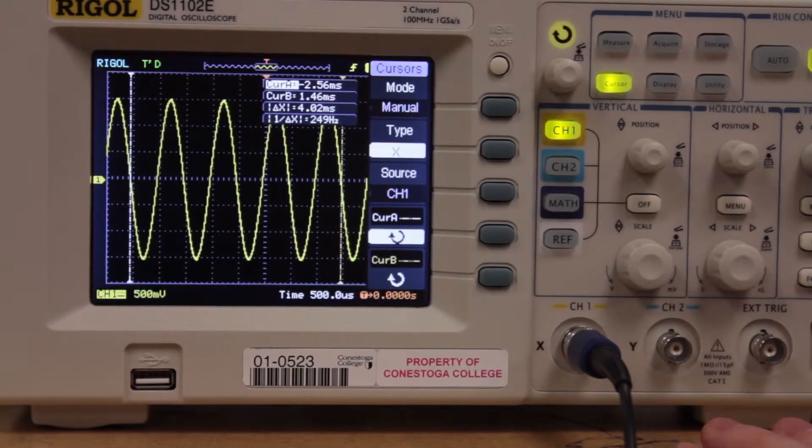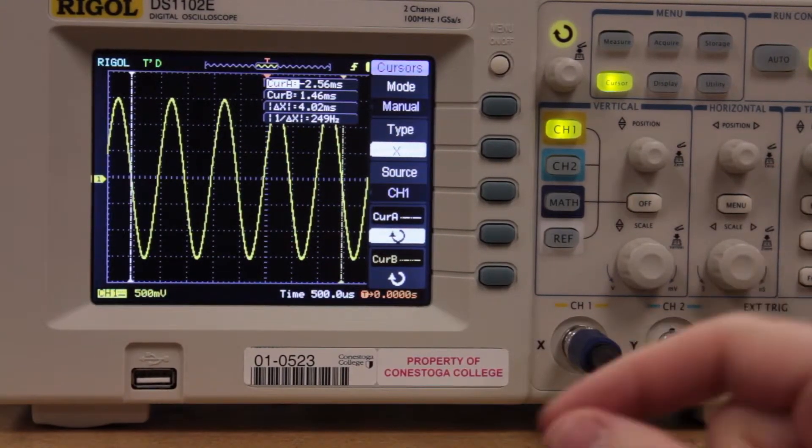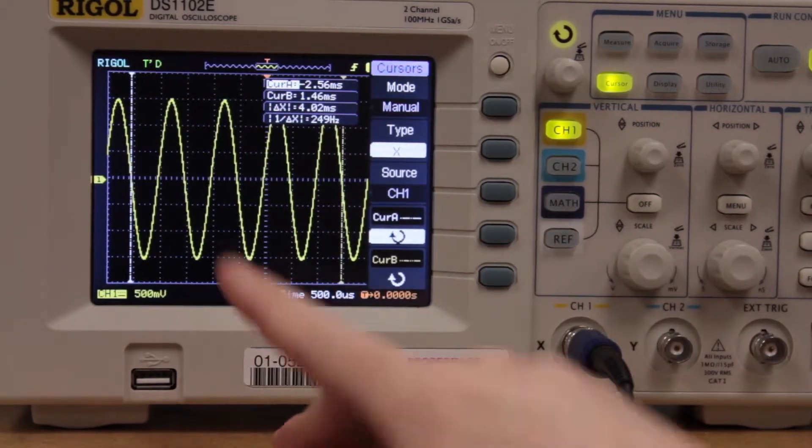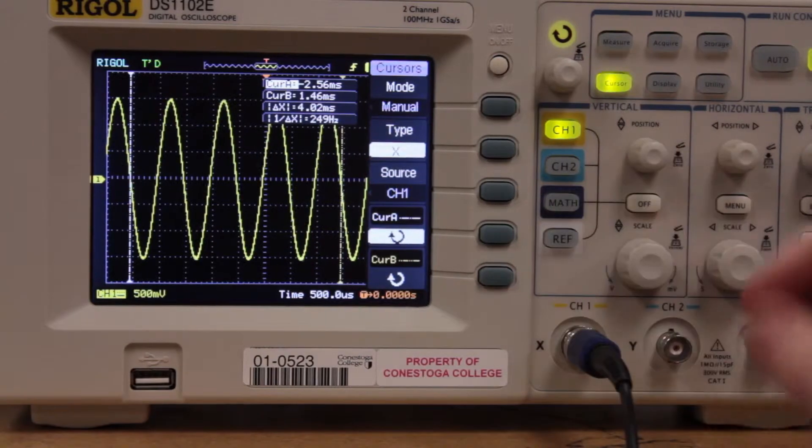Just one thing to note. I was saying waveforms earlier. Just a small correction here. I meant wavelengths. Basically each cycle here is one wavelength of this sine wave that we're looking at.